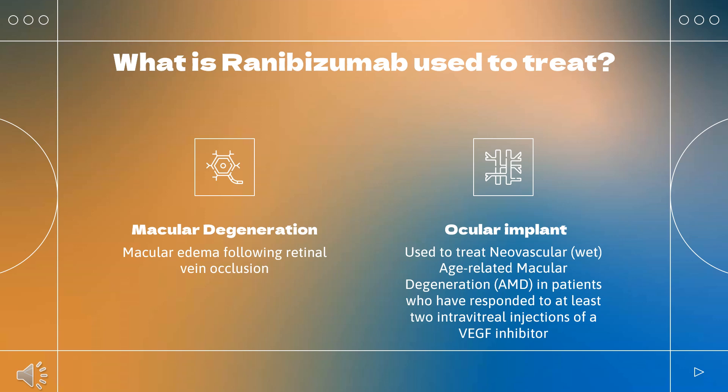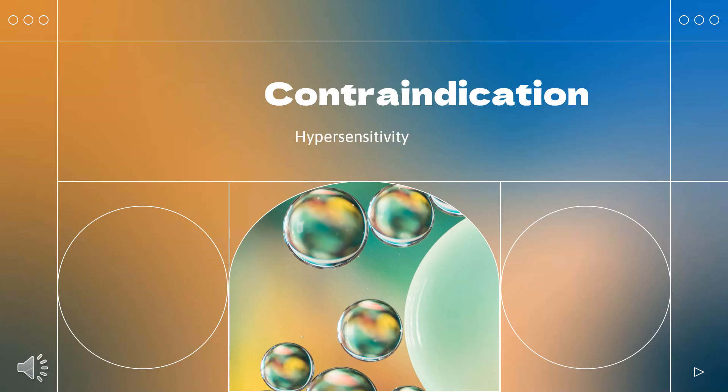Ranibizumab injection for intravitreal use via ocular implant is used to treat neovascular (wet) age-related macular degeneration (AMD) in patients who have responded to at least two intravitreal injections of a VEGF inhibitor. Contraindications include ocular or periocular infections and hypersensitivity. Patients who have an ocular infection, who recently underwent ocular surgery, or have increased intraocular pressures should avoid Ranibizumab use.